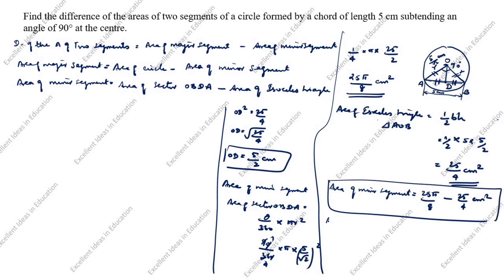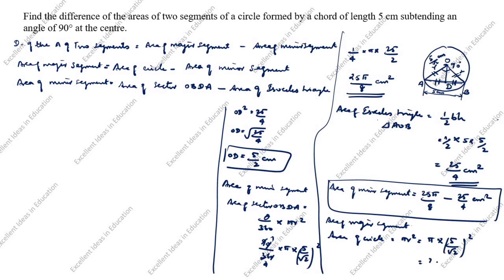Next, we will find the area of the major segment. The formula is area of circle minus area of minor segment. First, area of circle = pi × R² = pi × (5/root 2)² = pi × 25/2 = 25 pi by 2 centimeter square.